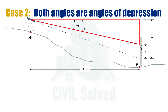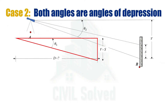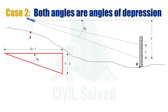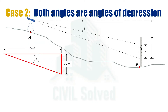Since we are asked to calculate the horizontal distance D, we need to consider this right angle triangle. In this right angle triangle the angle is theta 1 and the base is D. The perpendicular is not directly given, but we can calculate that the perpendicular would be the difference of V and S. Considering this right angle triangle, we use the trigonometric relationship tan theta.